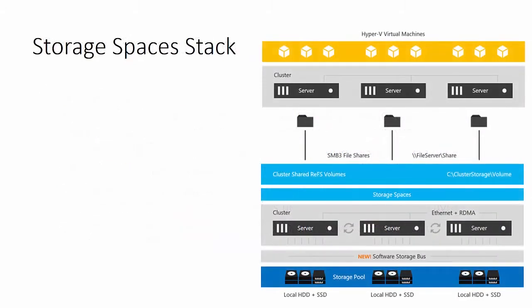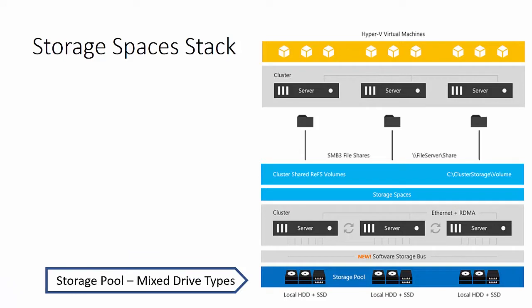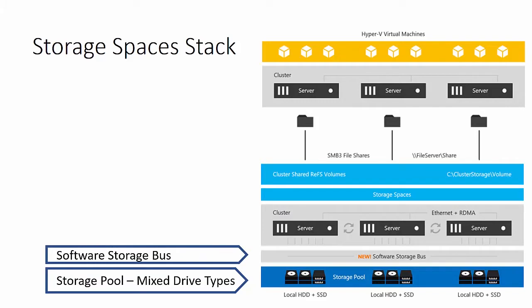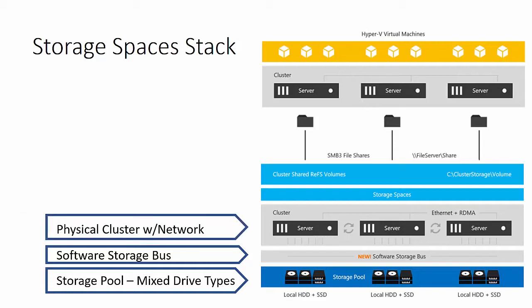Looking at the entire stack, starting at the bottom, you have a storage pool which can have a mix of drive types. The next layer is the software storage bus, which has a lot of intelligence and can have significant effects on the storage pool. Then you have your physical cluster with networking — generally high-speed Ethernet at 10 or 40 gigabit per second — and RDMA is also in that layer.